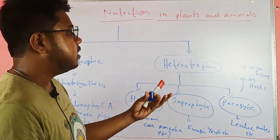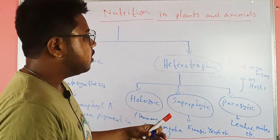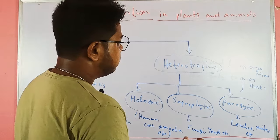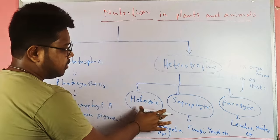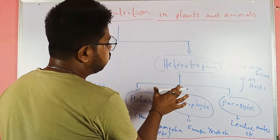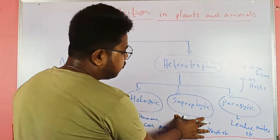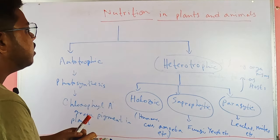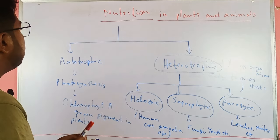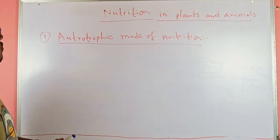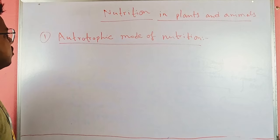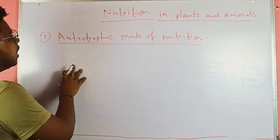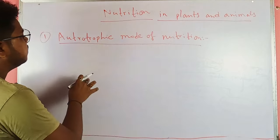These are the three different types of heterotrophic nutrition: holozoic, saprophytic, and parasitic. Now we will come to autotrophic nutrition, where plants are fully involved in the process.